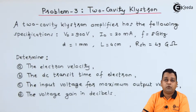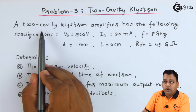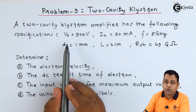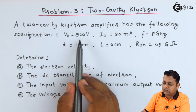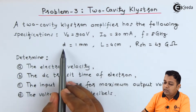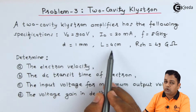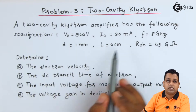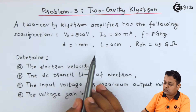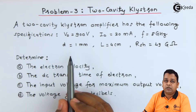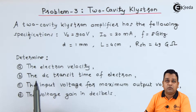Here we are provided with the problem statement for problem 3. A 2-cavity klystron amplifier has the following specifications: V0 is equal to 900 volts, I0 is equal to 30 mA, f is equal to 8 GHz, d is equal to 1 mm, L is equal to 4 cm, RSH is equal to 49 kΩ. With these provided specification values, we are asked to determine 4 parts.